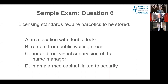Question six: Licensing standards require narcotics to be stored — A, in a location with double locks; B, remote from public waiting areas; C, under direct supervision of the nurse manager; D, in an alarm cabinet linked to security. These all look pretty good. I looked at FGI, and it pushes you to the code of federal regulations, which says A — in a location with double locks — is the answer. These are great opportunities to see where you need to dig a little deeper into some material.